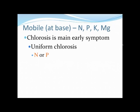Now we need to look at the symptoms. This is where it gets tricky, because when I was first introduced to nutrient deficiencies, the same symptoms would recur over and over and it was overwhelming. That's why we're taking this systematic approach. We know that if symptoms on the bottom of the plant are uniform chlorosis, we've narrowed it down to either nitrogen or phosphorus.